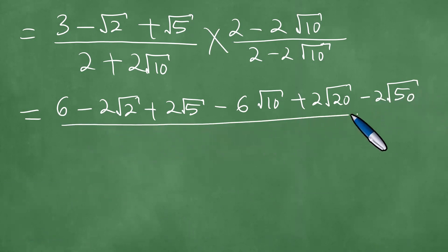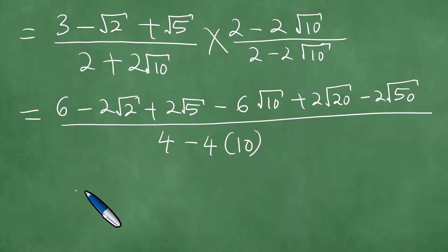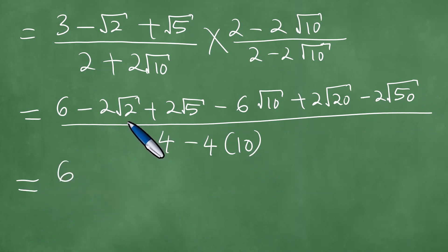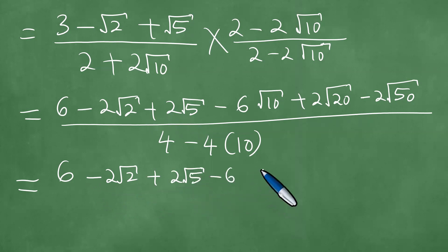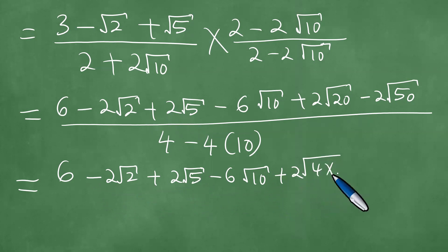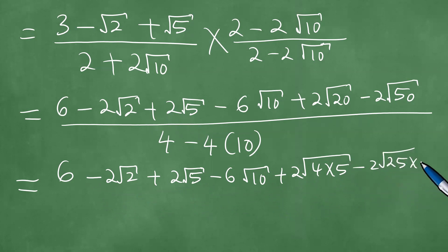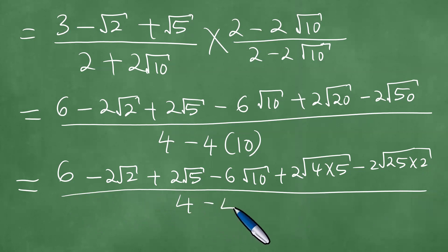Now proceed to do division with 2 by 2. It's 4 minus 4 times the square root of 10. The square root of 2 now appears in a couple of places. If we simplify, we're going to be able to see this. Let us simplify the terms in the numerator: 2 times the square root of 20 is the square root of 4 times 5. And this one here is 25 times 2. Divide everything by 4 minus 40.